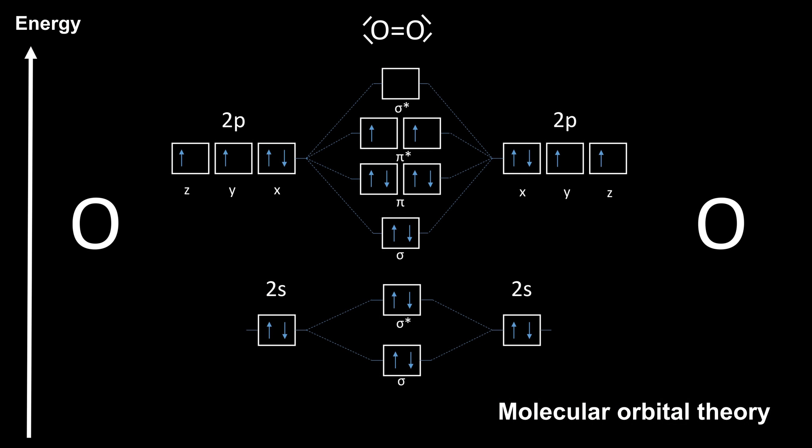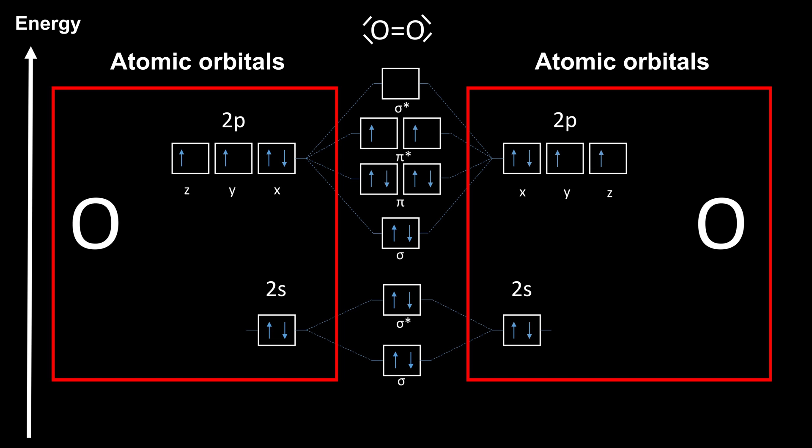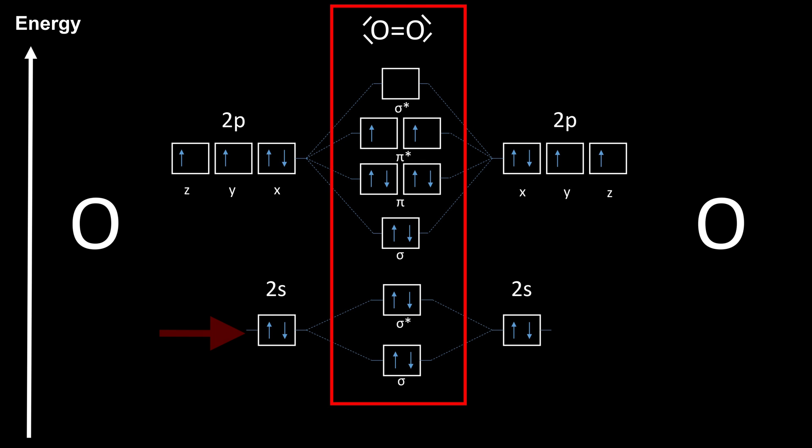For oxygen, the diagram looks like this. To the left and right are the atomic orbitals of the two oxygen atoms, which can be used to form molecular orbitals. Both of the s orbitals of the oxygen atoms provide two electrons each, so the bonding and antibonding orbitals are filled with electrons, leading to no bond.